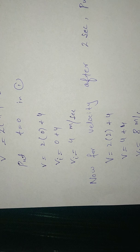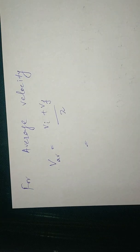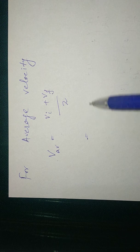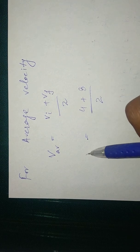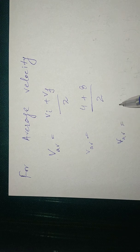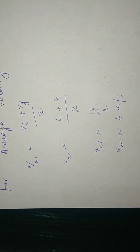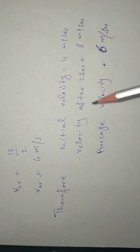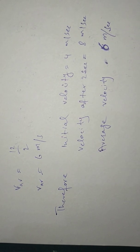For average velocity, v average equals v initial plus v final divided by 2. We have v initial equal to 4 and v final equal to 8; dividing by 2 gives 12 by 2, that is 6 meters per second. Therefore: initial velocity when t equals 0 is 4 meters per second, velocity after 2 seconds is 8 meters per second, and average velocity over the first 2 seconds is 6 meters per second.